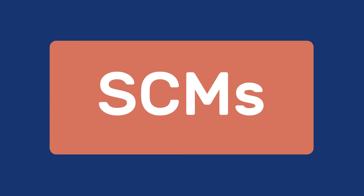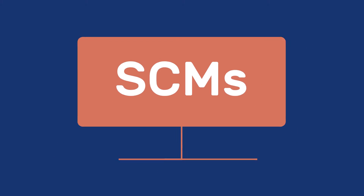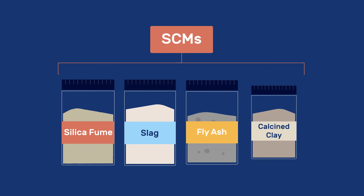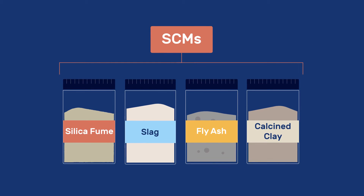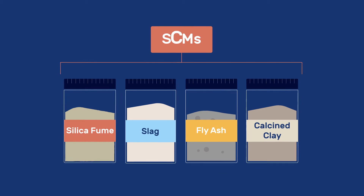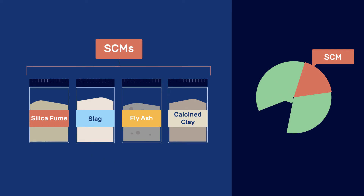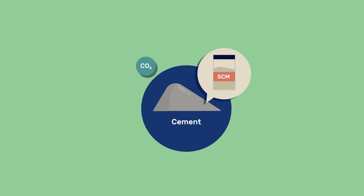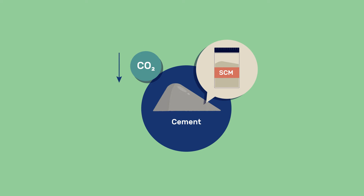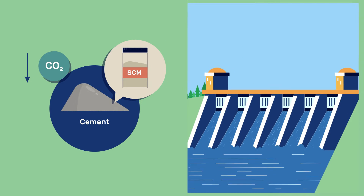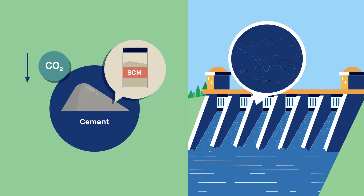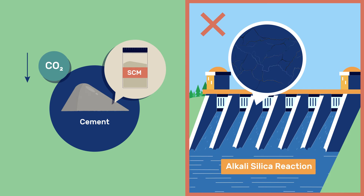In this video, we present an overview on supplementary cementitious materials, or SCMs, that are used as partial substitutes for clinker in Portland cement, mainly to reduce its environmental footprint, but also to achieve certain properties of interest, such as resistance to alkali-silica reaction.